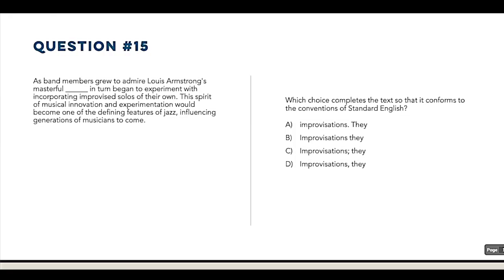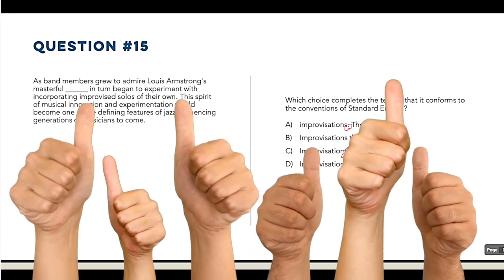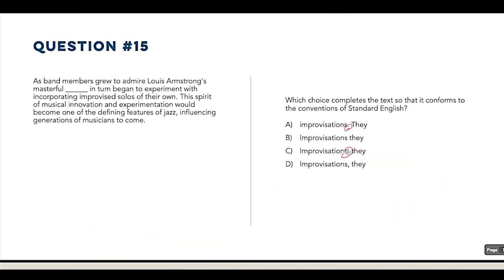While that may be true in your own writing, on the digital SAT, we simply do not care. You will never have to make a stylistic choice on the digital SAT. On this question, for example, we see that a period and a semicolon are both options, which is cool because they do the same thing, and there's no other difference in the answers, so we know that we can eliminate both of them because you can't have two right answers.